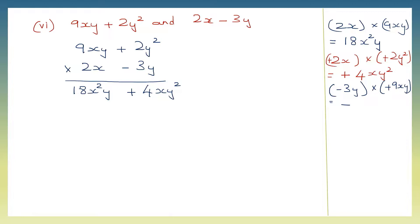Numbers: 3 nines are 27. Now y into y is y squared, but there is an x also — so xy squared. So minus 27xy squared. Let's put it in the right column: minus 27xy squared. Now we're going to multiply minus 3y into plus 2y squared.